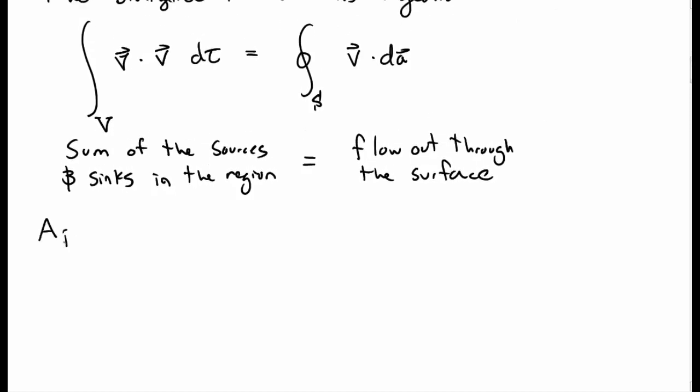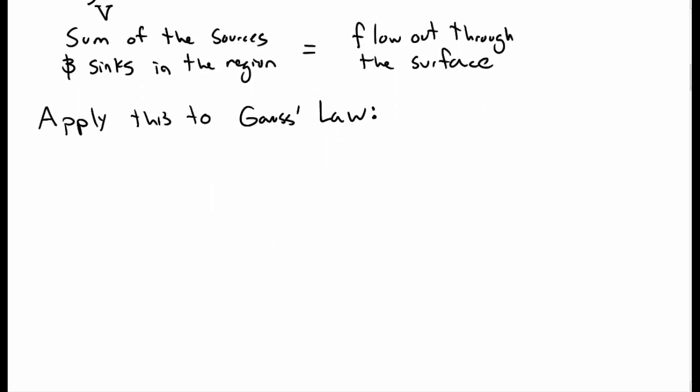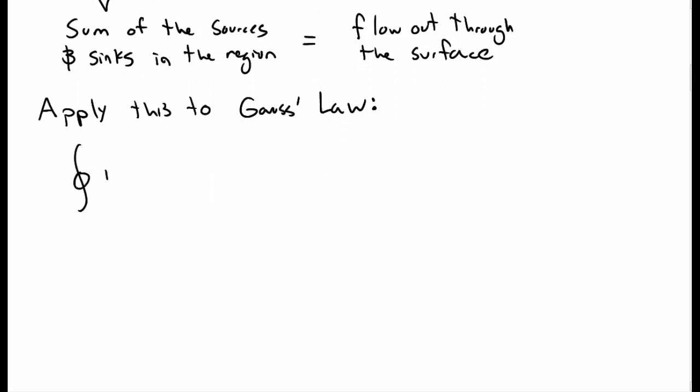So now what I want to do is I want to apply this to Gauss's law. Because Gauss's law has this form of a closed integral of E dot dA. So let's see what we can do with this. So we have the closed integral of E dot dA, and by Gauss's law, that must be equal to the charge enclosed over epsilon naught.